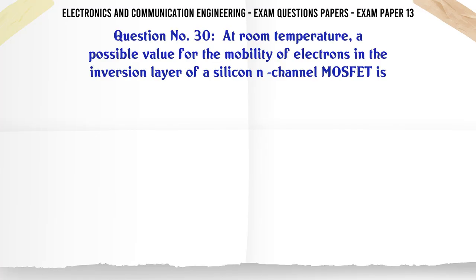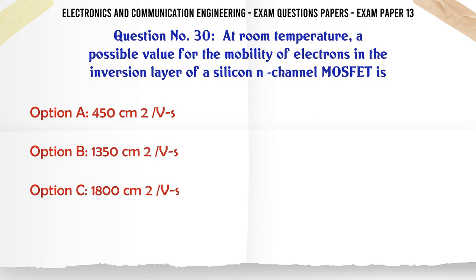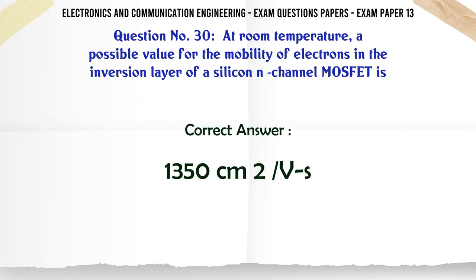At room temperature, a possible value for the mobility of electrons in the inversion layer of a silicon N-channel MOSFET is: A: 450 cm^2/Vs, B: 1,350 cm^2/Vs, C: 1,800 cm^2/Vs, D: 3,600 cm^2/Vs. The correct answer is 1,350 cm^2/Vs.